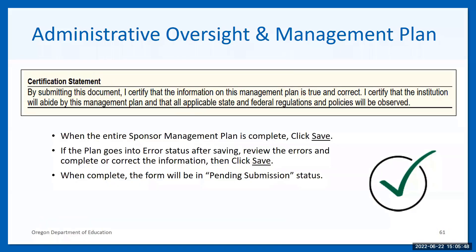The last question asks how the institution provides current information and eligibility requirements for WIC participation to parents and guardians of enrolled children. Note this is not applicable for adult care centers or at-risk centers. The final step is to certify and submit the management plan. By submitting this form, you are certifying that the information is true and correct. The person who submits the management plan must be the contact person listed on lines one through six. When ready, click save at the bottom of the page. If the plan goes into error status, review and correct the information and then click save again. The management plan will go into pending submission status once fully completed.